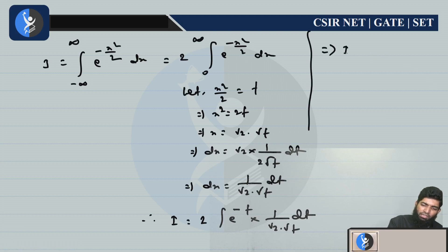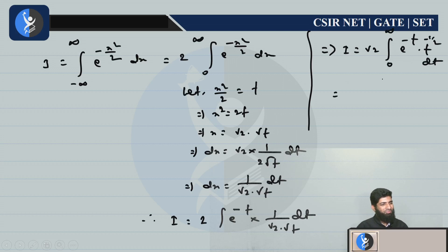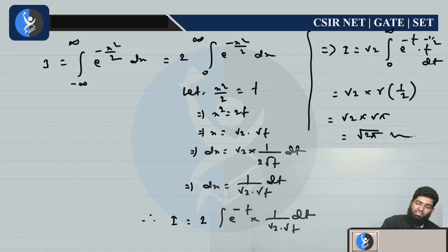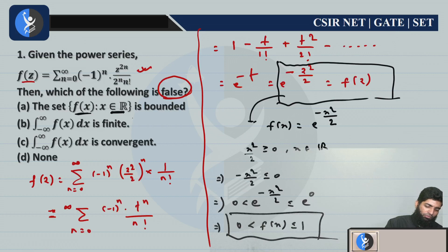Therefore what is your integration? Two times the integral of e^(-t) times 1/(root(2) times root(t)) dt. So finally I equals root(2) times the integral from 0 to infinity of e^(-t) times t^(-1/2) dt. So t to the power 1/2 in the numerator becomes -1/2 in the exponent, and the limit is from 0 to infinity. Now this is gamma function, yes or no? So you can write gamma(n+1), so -1/2 + 1 means 1/2. And you know what is gamma(1/2) - this is root π. So overall the value of this integration is root(2π), which is finite. Therefore this is finite.